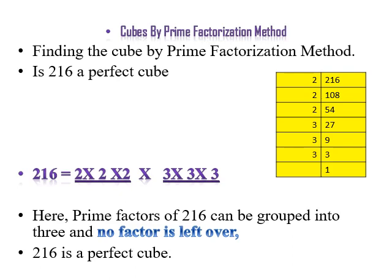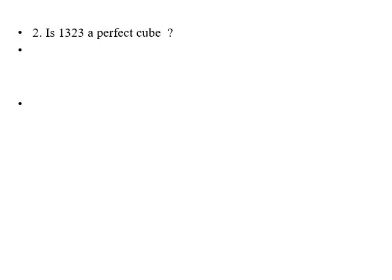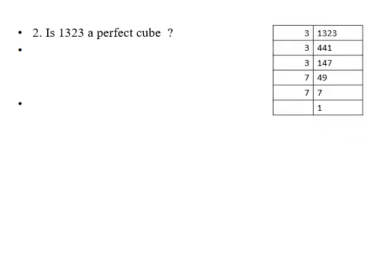Let's see the second example: is 1323 a perfect cube? For this, we will first find out the prime factors of 1323. 1323 is divisible by 3, giving 441. 441 is again divisible by 3, giving 147. 147 is divisible by 3, giving 49.